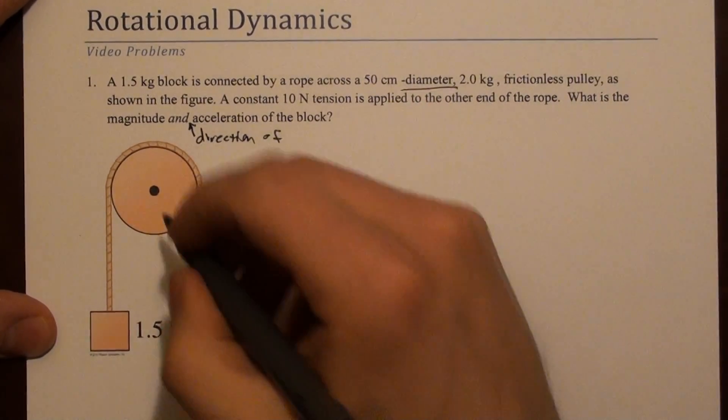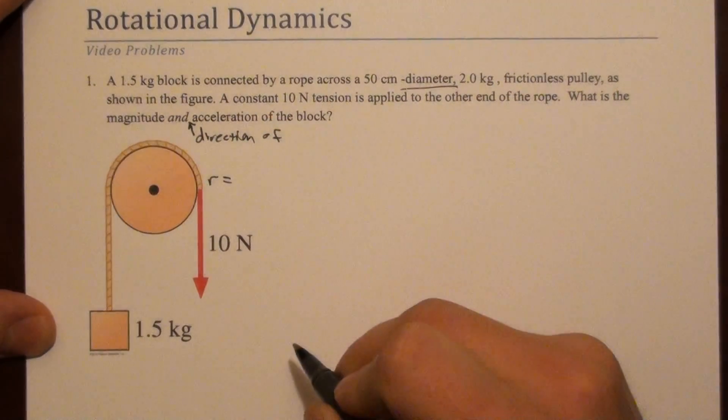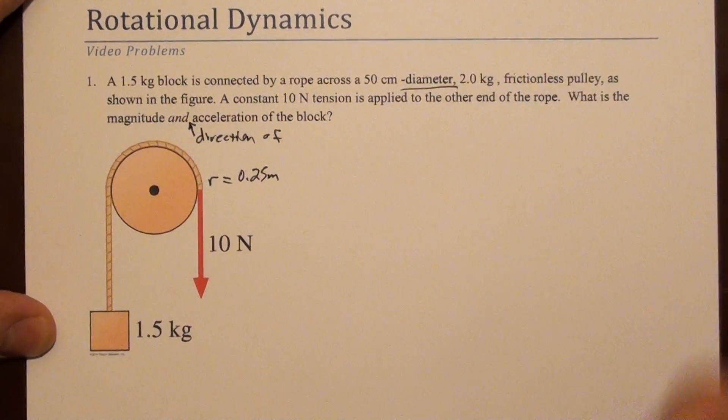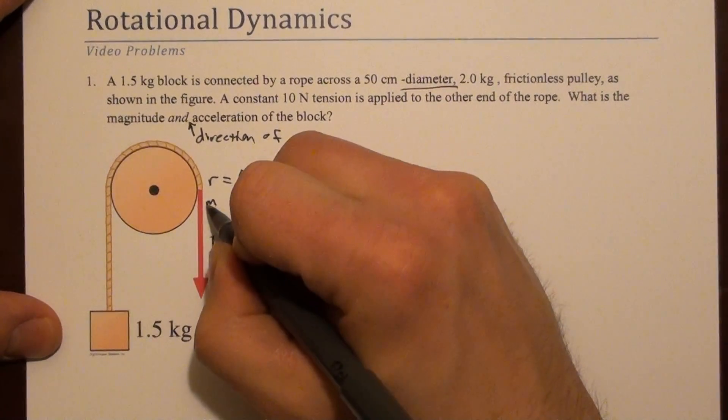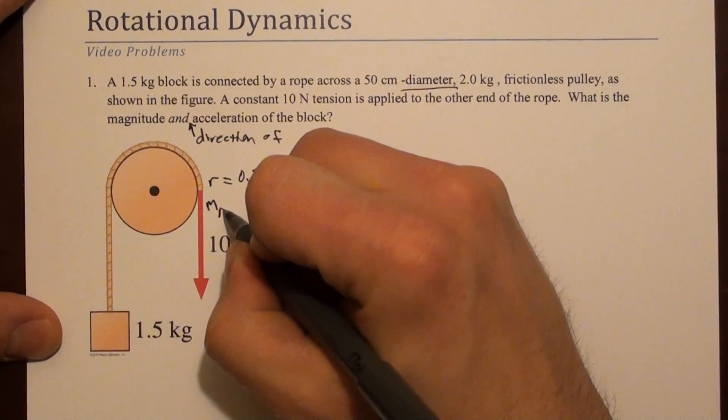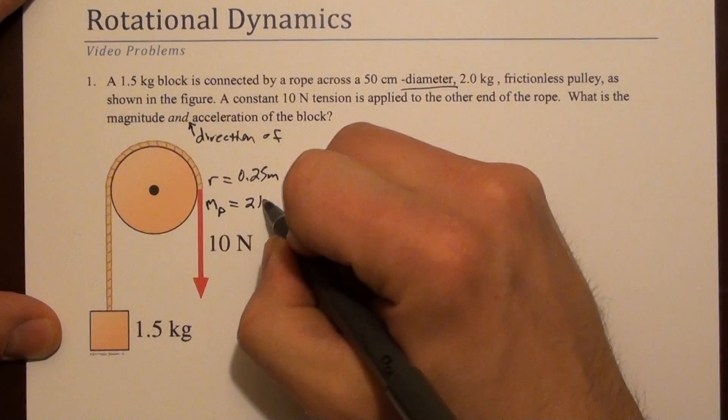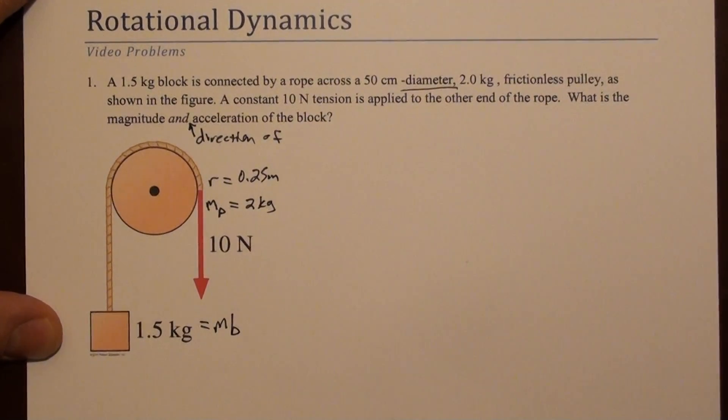We're given this 50 centimeter diameter, that means that the radius of this thing is 25 centimeters, so I'm going to write it as 0.25 meters, right off the bat. And the mass of this, so this is m sub pulley, is 2 kilograms. And this may be m sub block, just for clarity.